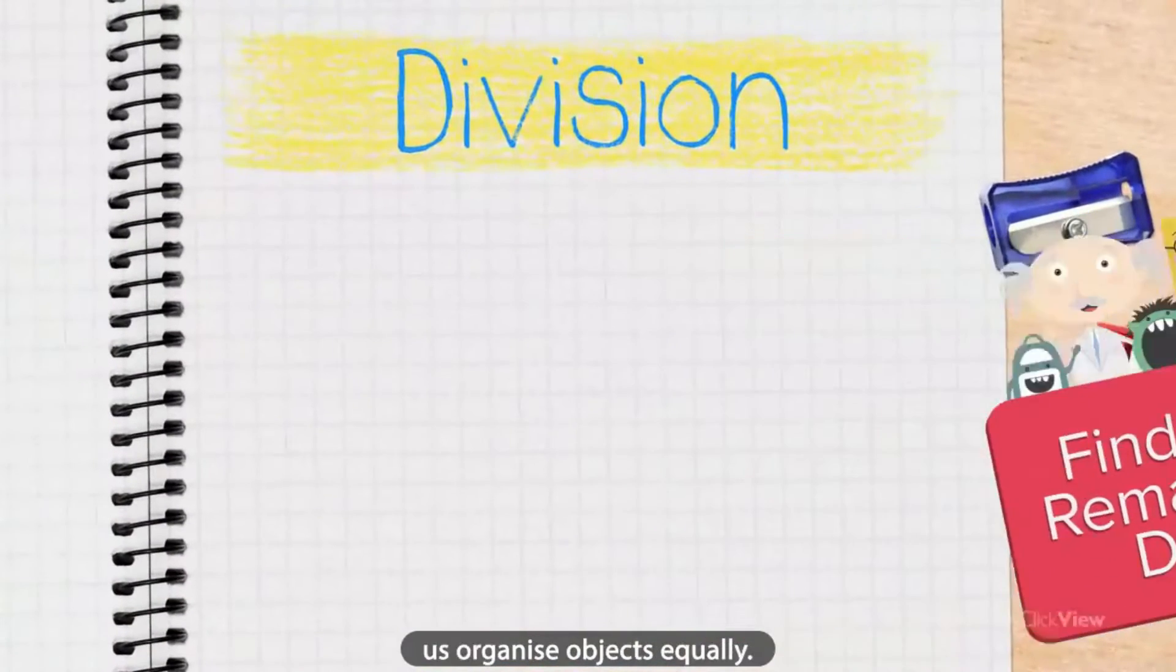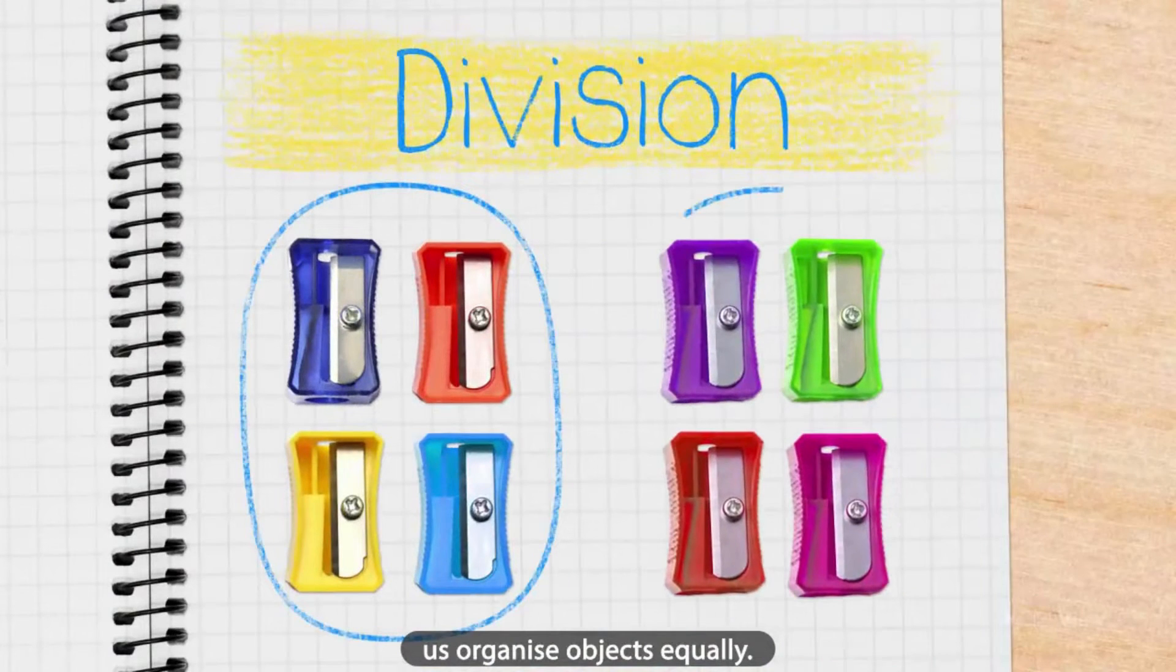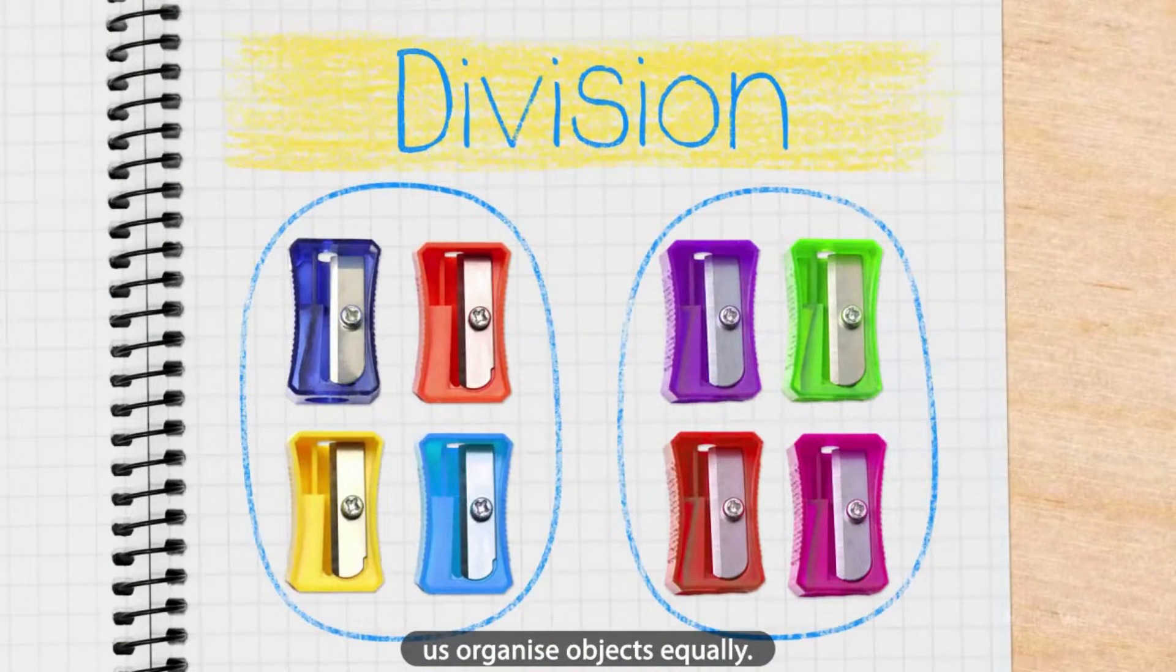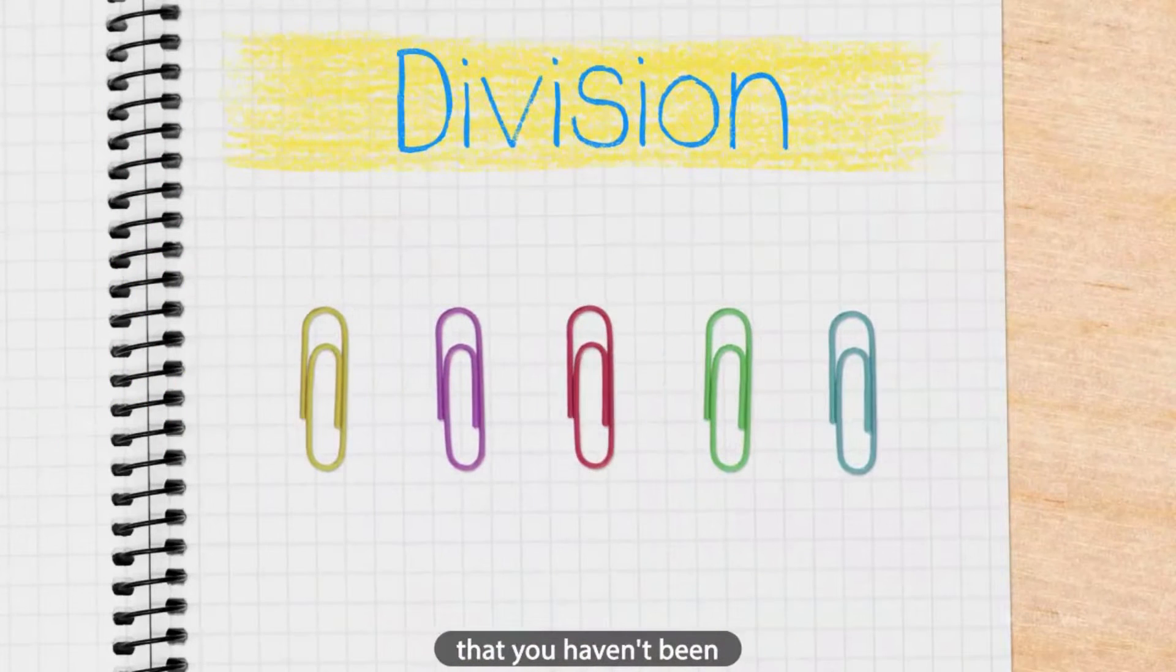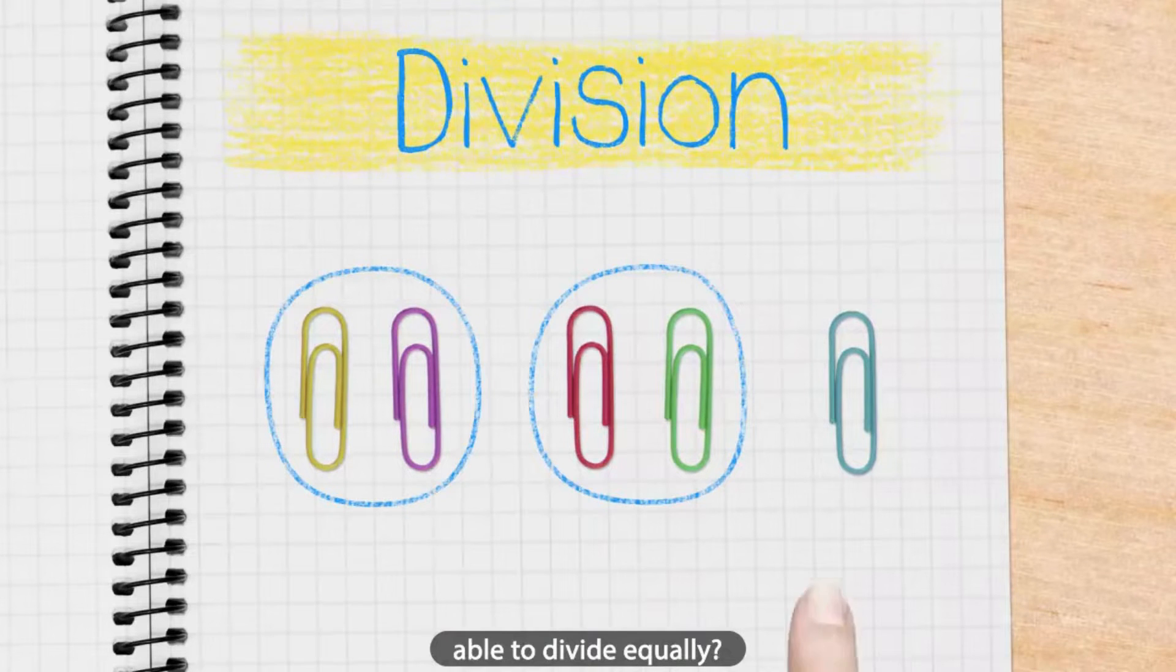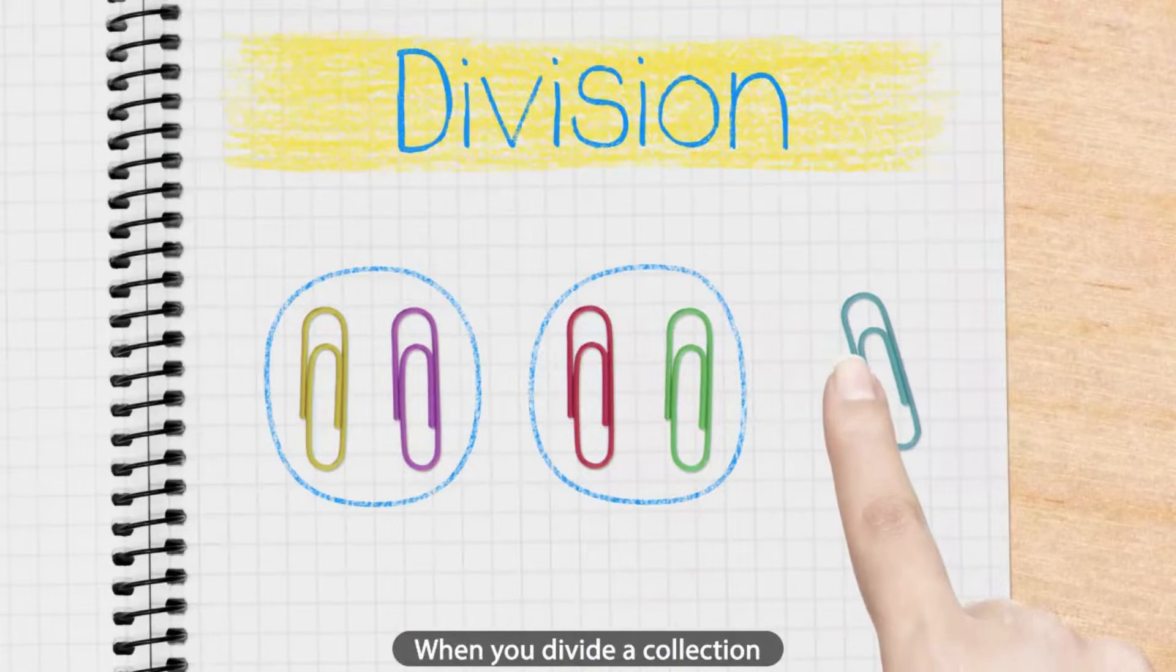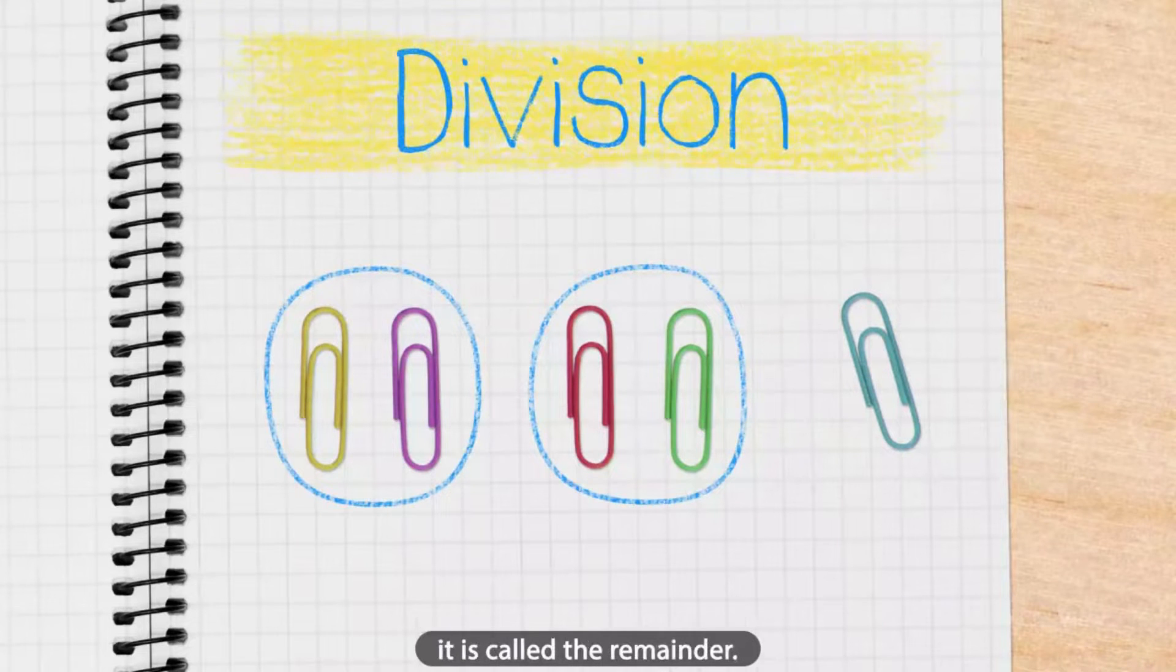Division helps us organize objects equally. But have you ever come across a collection of objects that you haven't been able to divide equally? When you divide a collection and there is a leftover, it is called the remainder.